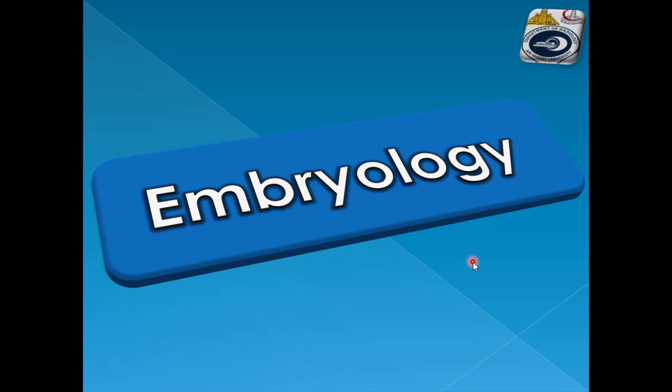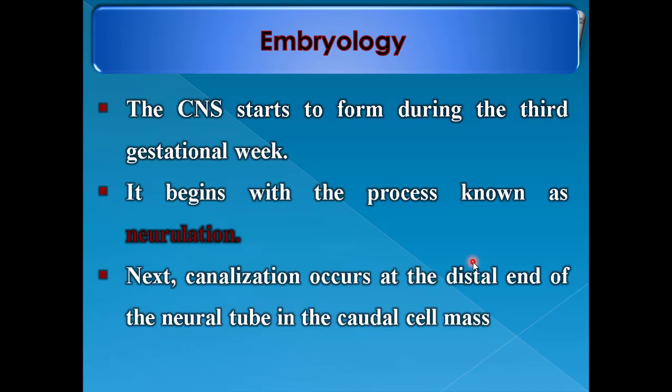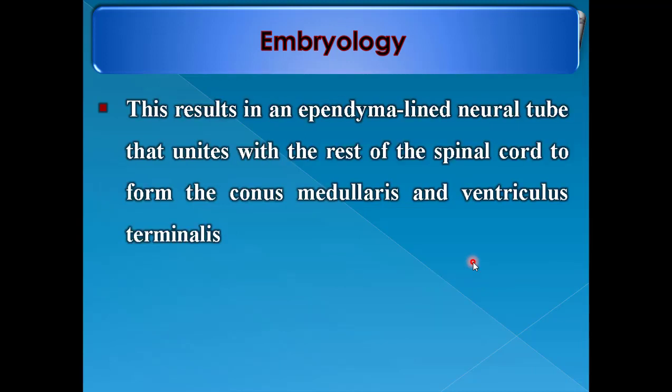The CNS starts to form during the third gestational week. It begins with the process known as neurulation. Next, canalization occurs at the end of the neural tube in the caudal cell mass. This results in an ependymal-lined neural tube that unites with the rest of the spinal cord.